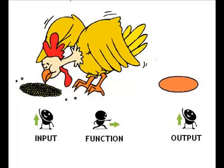The aggregate production function is how inputs are magically changed into output. This is a metaphorical production function where corn is turned into an egg. Inputs are land, labor, capital, and the state of technology. Outputs are goods and services. Here the input is a corncob and the output is an egg.